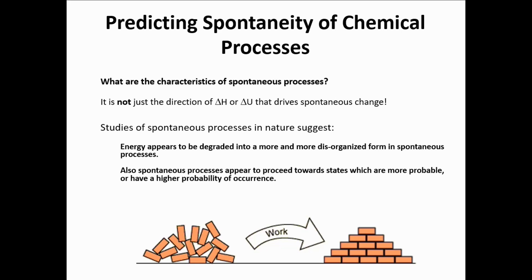Spontaneous processes proceed towards states which are more probable. For example, imagine you have some bricks in a bag. If you empty the bricks from the bag, then of these two arrangements, clearly the one on the left is more probable when the bricks exit the bag. The more probable arrangement is the most likely one and therefore represents the direction of spontaneity. The situation on the right is not impossible but is just very low probability and would not represent a spontaneous change.